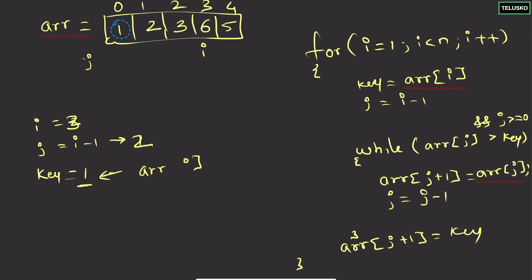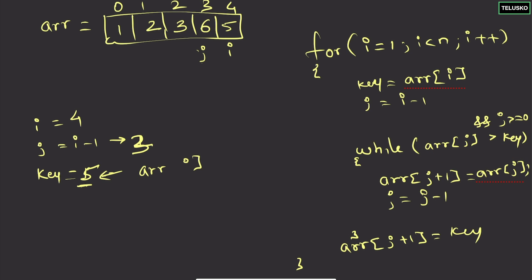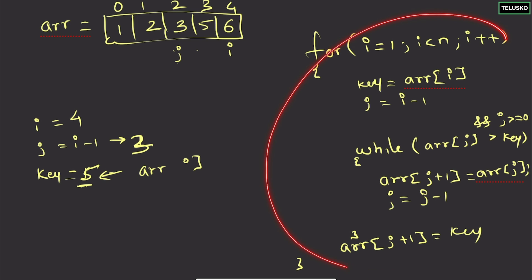For key = 5: i becomes four, j becomes three. j starts at i minus one. arr[j] is six, which is greater than five — so we shift six to the right and decrement j. Now arr[j] is not greater than five, so we exit the loop and place five there. The array is now fully sorted.